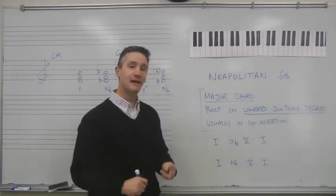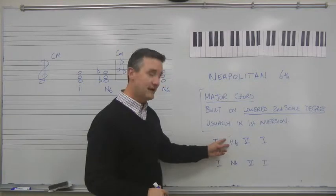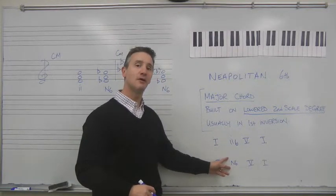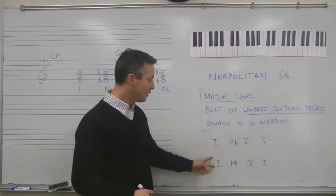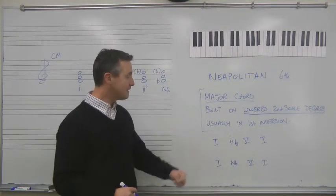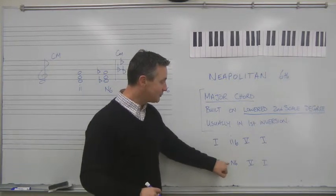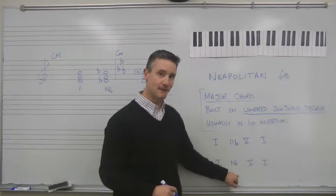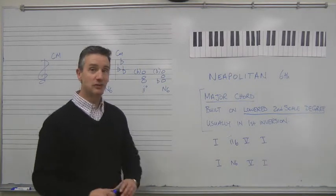And because the 2 chord is in play and it is used within the context of common practice harmony, then we can say that it should be OK to substitute, instead, the Neapolitan sixth for that 2 chord. So 1-2-6-5-1 becomes 1-Neapolitan sixth-5-1. And you voice lead it in the same way that you would. You simply insert the appropriate accidentals to create a major chord built on the lower second scale degree. And just substitute one for the other. So that's really how it's used.